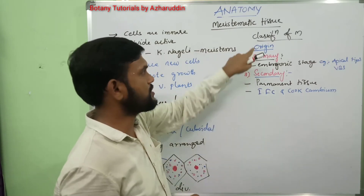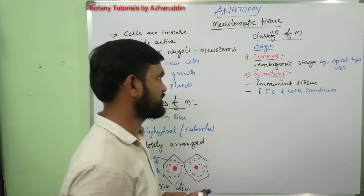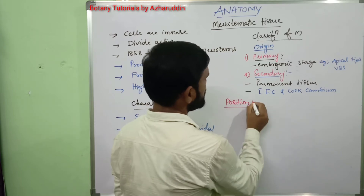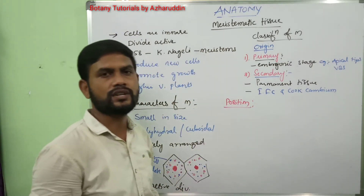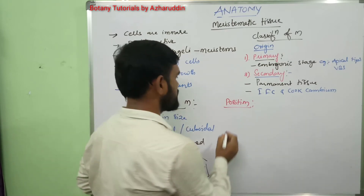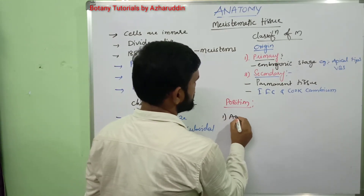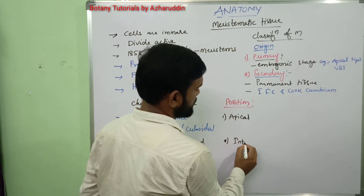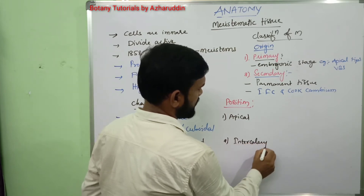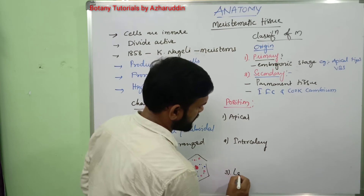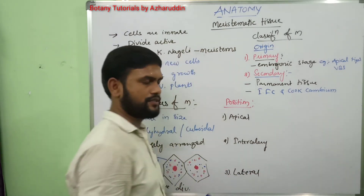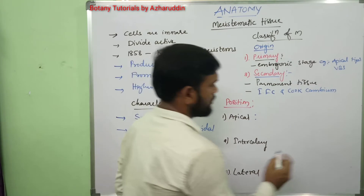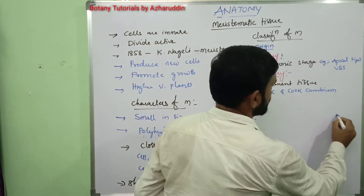Next, the second classification is based on position. Based on position, meristematic tissues are classified into mainly three types: number one — apical meristems, second — intercalary meristems, and third — lateral meristems.